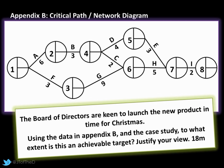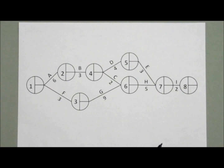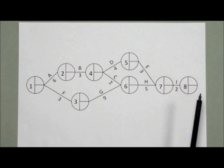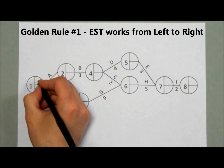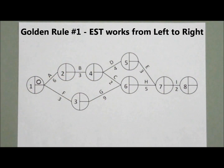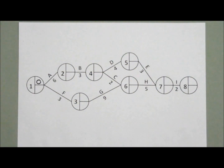Our question: the board of directors are keen to launch a new product until after Christmas, and the case study tells us that's 20 weeks away. So we've got a target to complete our network diagram with a latest finish time of 20 weeks. We're going to start with the early start time which goes in the top quadrant, and work our way from left to right. When we get there we can then work backwards for our latest finish time. We'll start with zero at the beginning, because there's no delay - no activities that precede it - so we can start theoretically immediately.